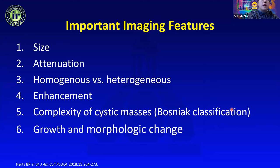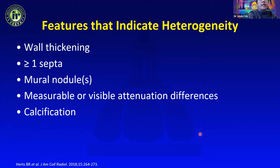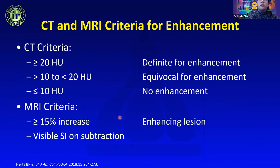For renal mass characterization, we need to pay attention to size, attenuation, whether the lesion is homogeneous or heterogeneous, any internal enhancement, and the complexity of cystic masses. Prior exams are always helpful for evaluating growth and morphologic change over time. Features indicating heterogeneity include wall thickening, septations, mural nodules, measurable attenuation differences between phases, and internal calcifications.